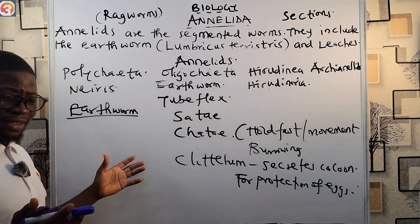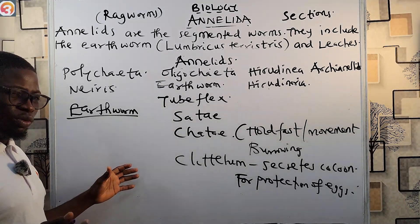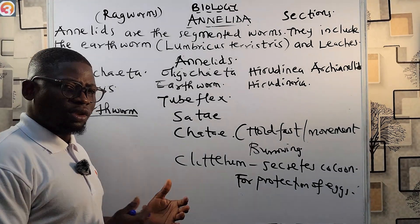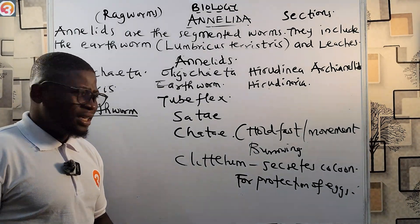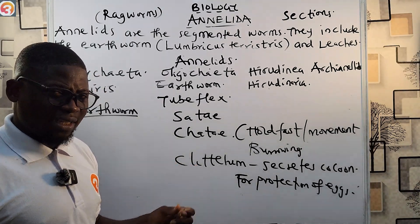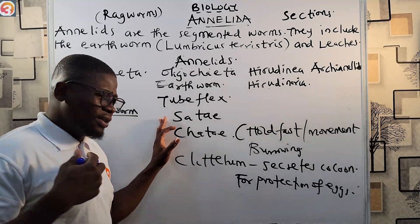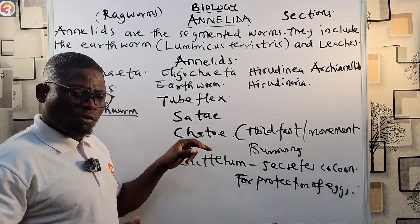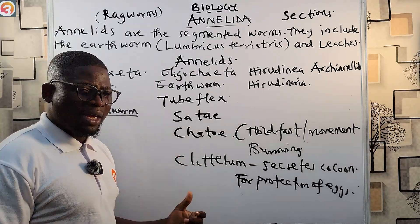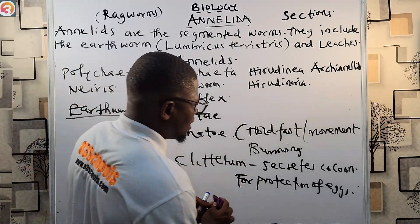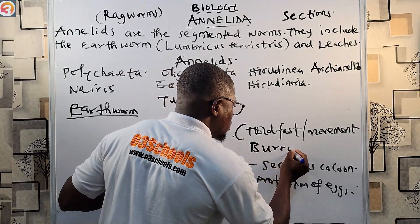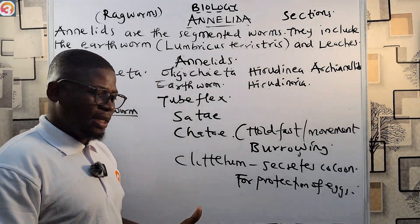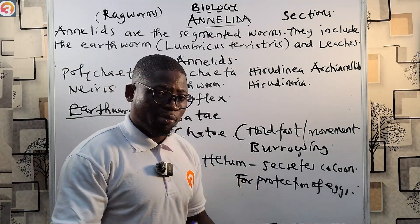In summary, the earthworm is cylindrical and segmented. It has setae for locomotion through the soil and for burrowing and anchoring into the ground. It has a clitellum that secretes cocoons for the protection of the eggs.